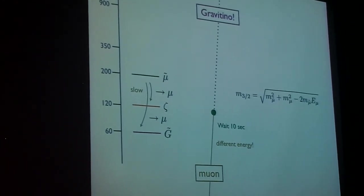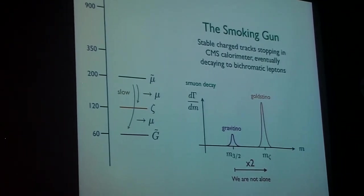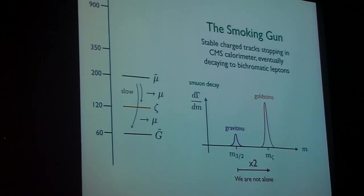And here's your smoking gun. We produced stable charge tracks. They stopped. We waited for them to decay. And they decayed bichromatically...